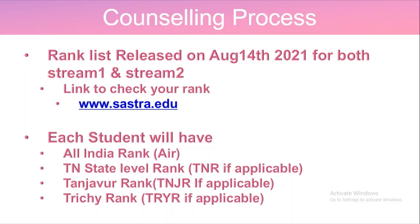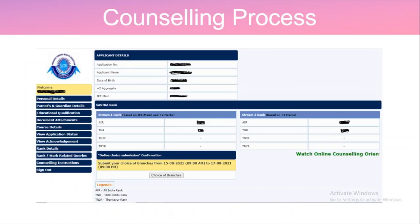On the rank list portal, you can log in with your application number and password to see the rank list. For each student, you will have an All India Rank, Tamil Nadu state rank if applicable, Tanjore rank if applicable, and Trichy rank if applicable. In the window, you can also see your Plus Two aggregate and JEE Main aggregate, along with your AIR, TNR, TNJR, and TRYR ranks.